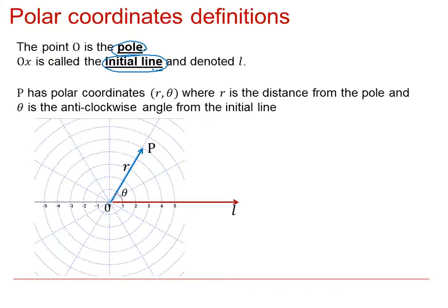Now we can talk about a point P which has polar coordinates r, theta. It's always r, the distance r, before the angle theta. R is the distance from the pole, and theta is defined as the anticlockwise angle from the initial line.